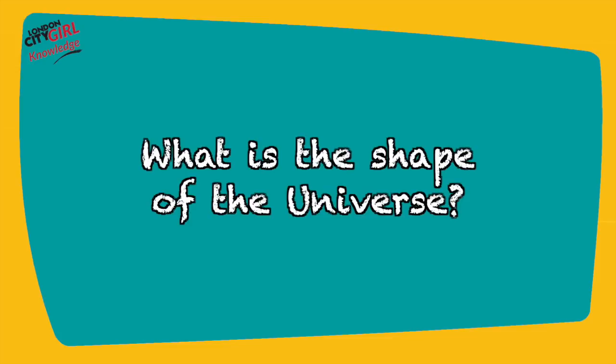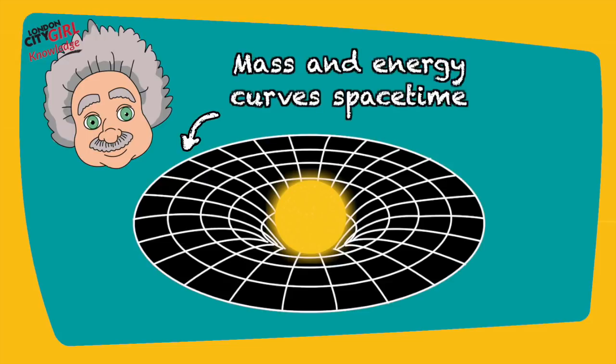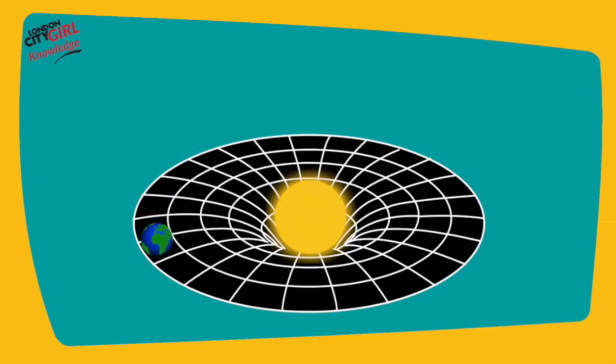What is the shape of the universe? Einstein's theory of general relativity describes how mass and energy can curve space-time, giving rise to the phenomena of gravity.